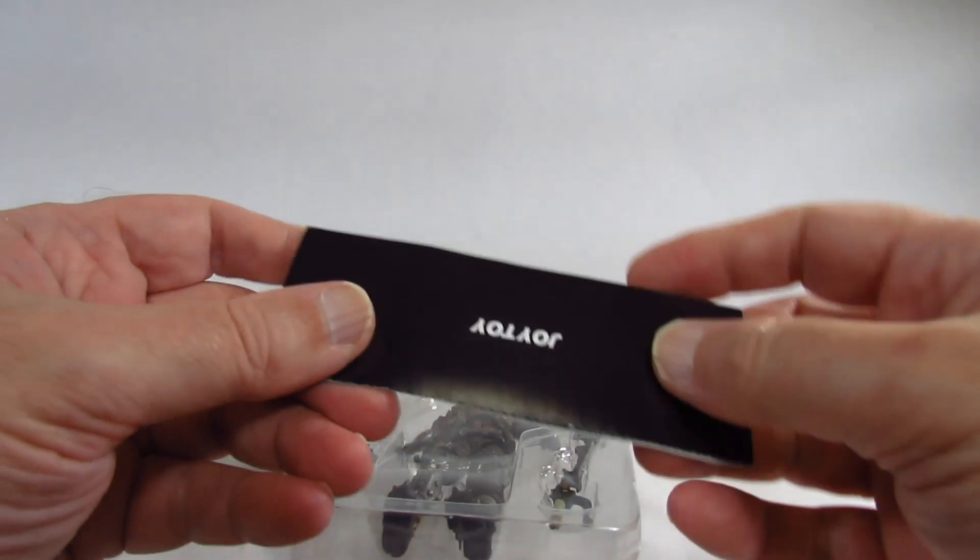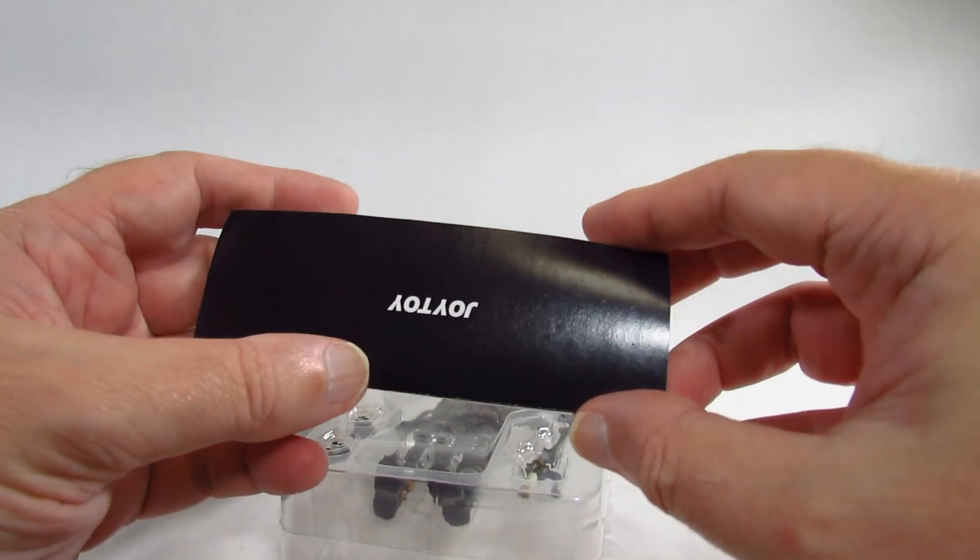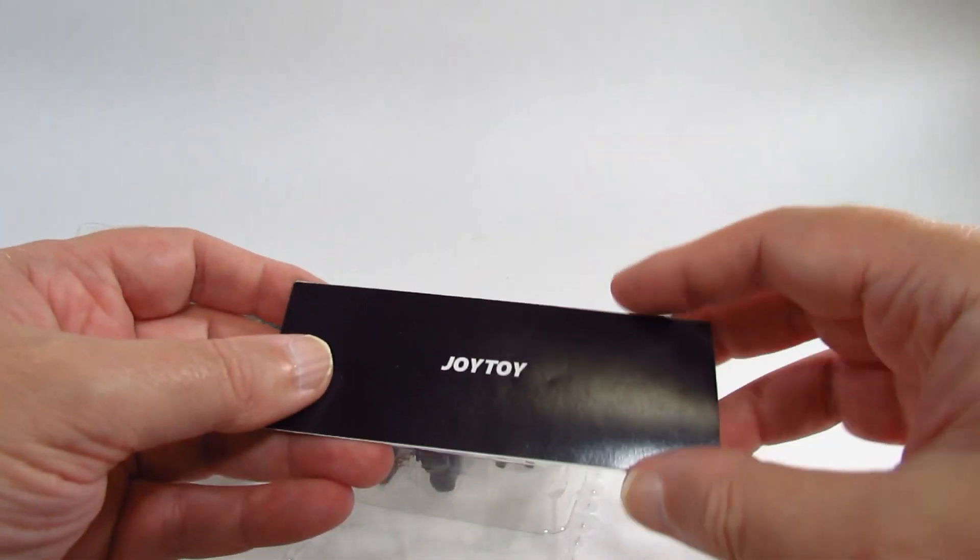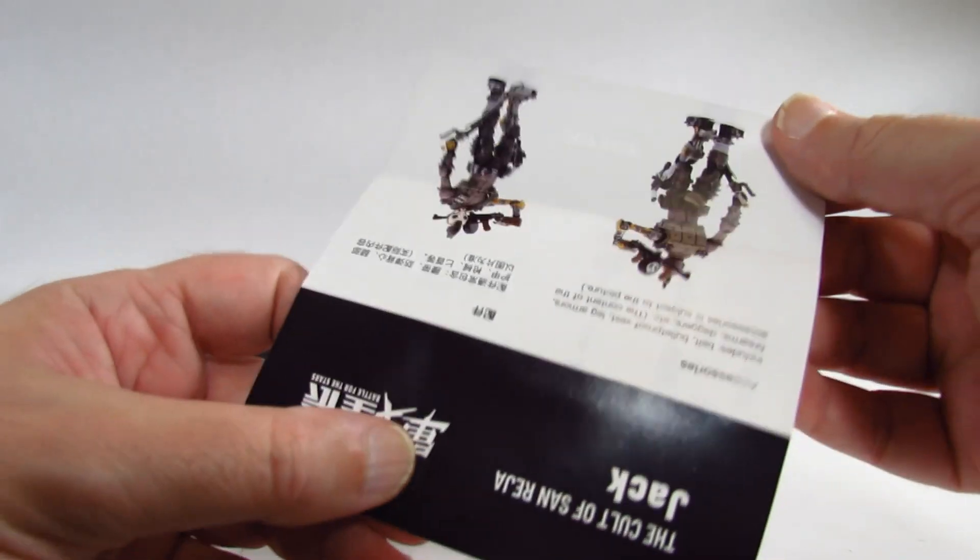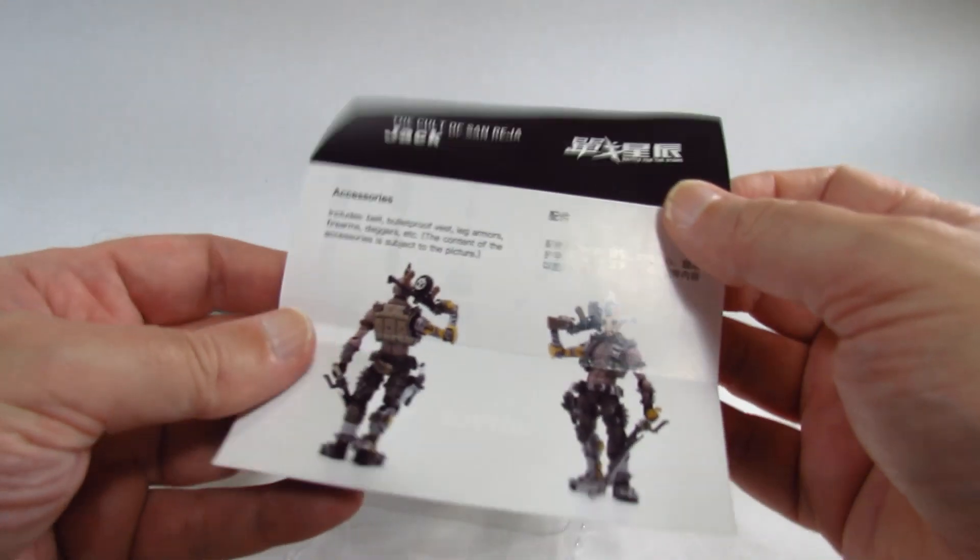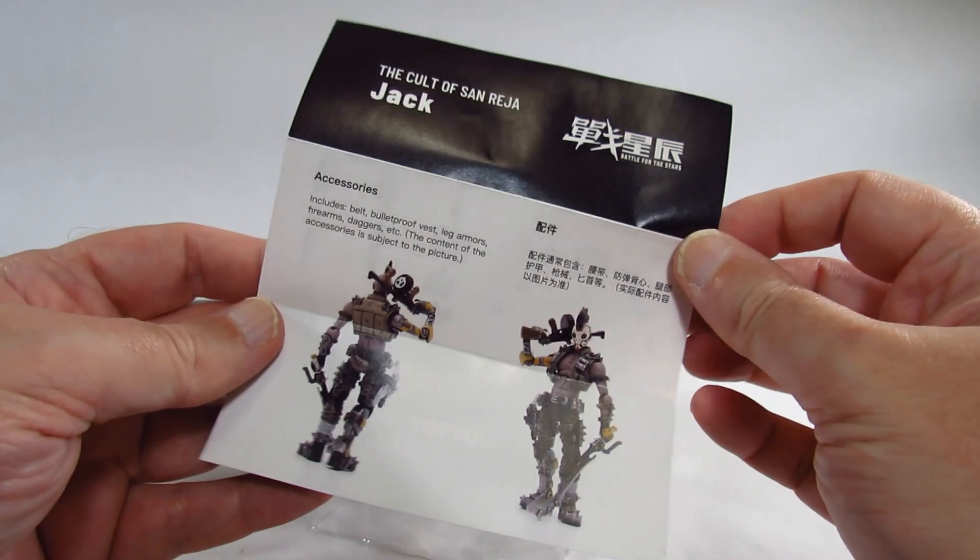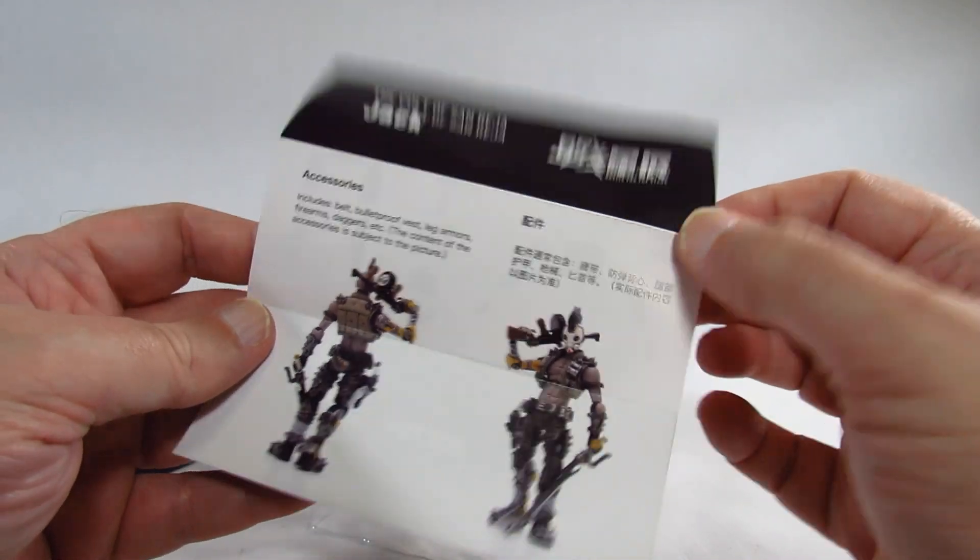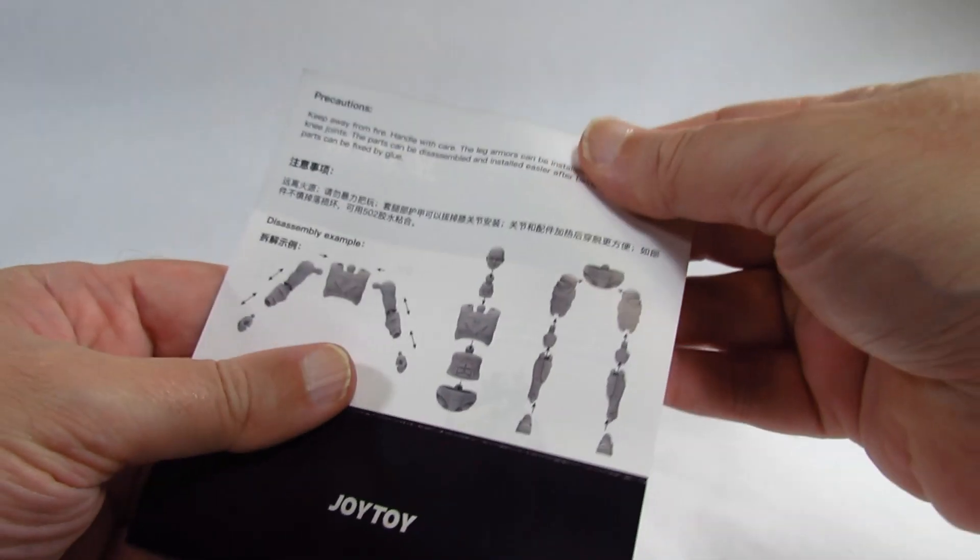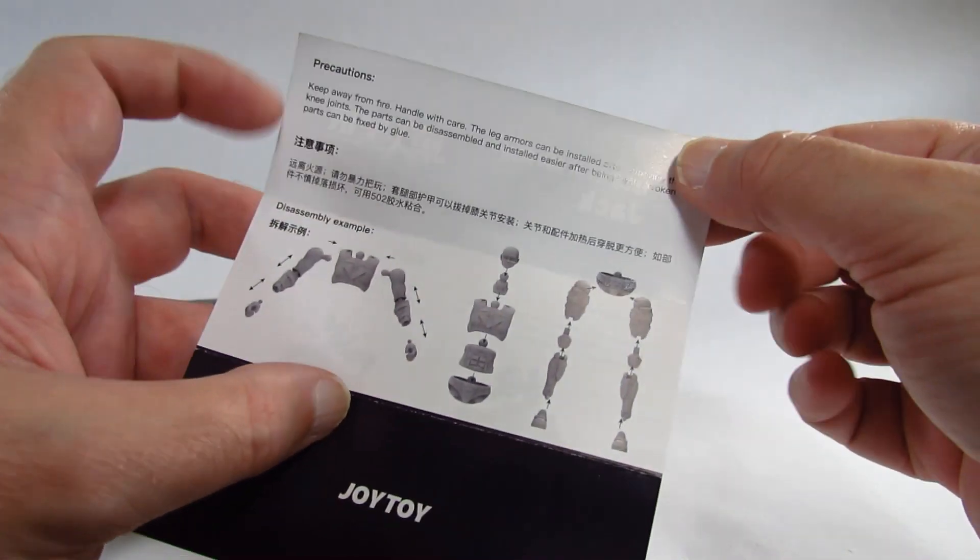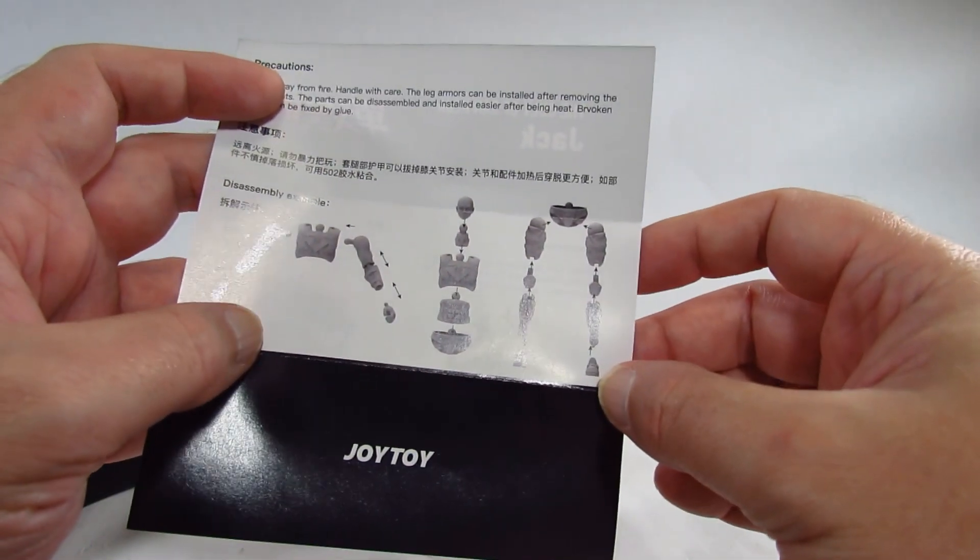And it comes with this paper, it says JoyToy, and here it gives us a picture of the figure on this side. Shows us how we can take it apart or how it's expected to be taken apart and put together, some suggestion.